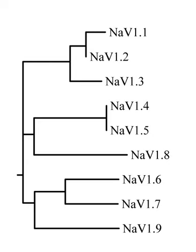The ions are conducted through a pore, which can be broken into two regions. The more external portion of the pore is formed by the P-loops — the region between S5 and S6 — of the four domains. This region is the most narrow part of the pore and is responsible for its ion selectivity. The inner portion of the pore is formed by the combined S5 and S6 segments of the four domains. The region linking domains 3 and IV is also important for channel function; this region plugs the channel after prolonged activation, inactivating it.